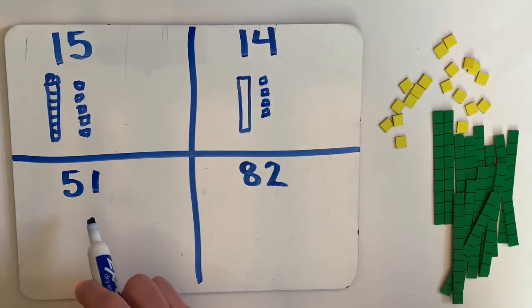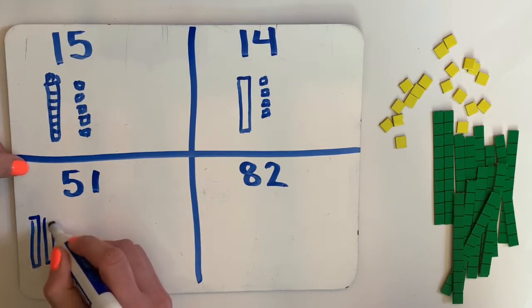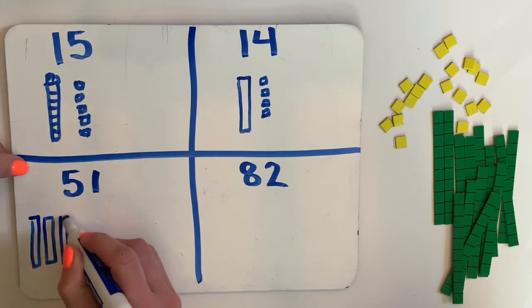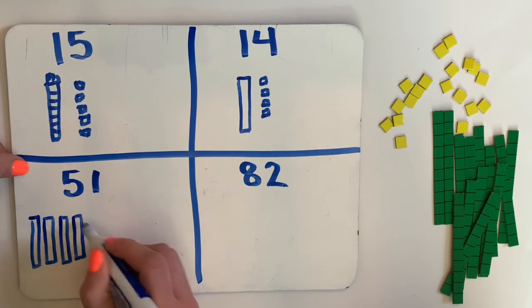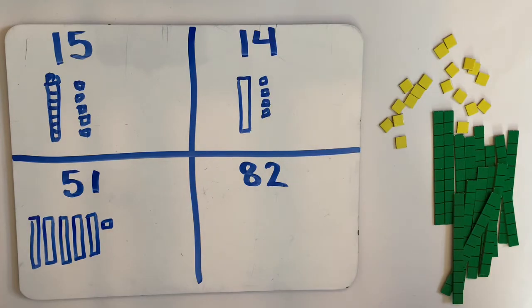51 is going to have more 10s. There's going to be five 10s in there. So let's do the 10s. 10, 20, 30, 40, 50, and only one one. That's what 51 would look like.